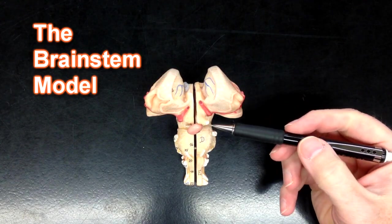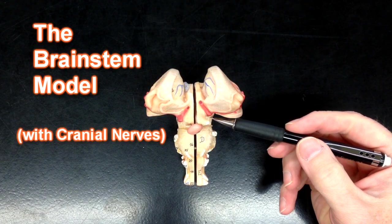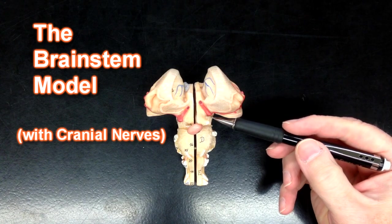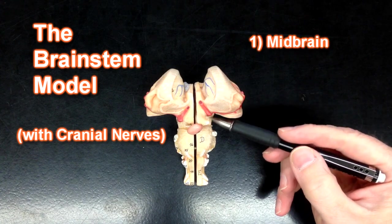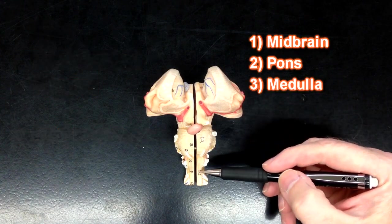What we're looking at right here is a brainstem model. Remember, a brainstem consists of the midbrain, pons, and medulla.